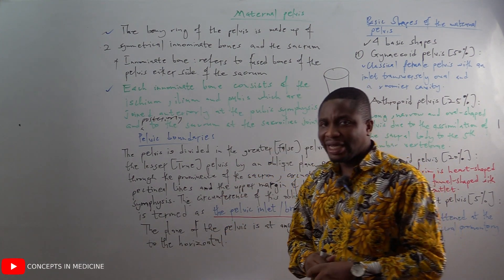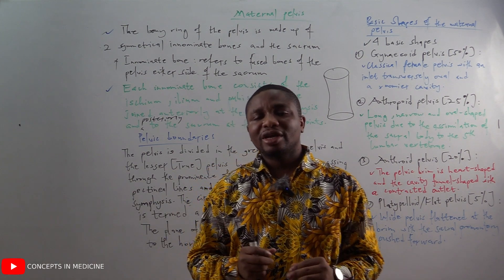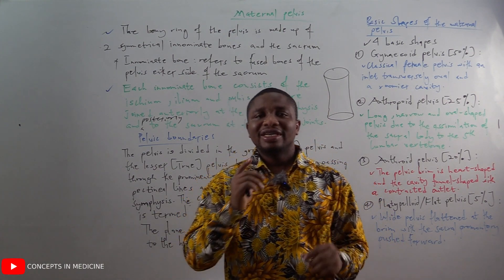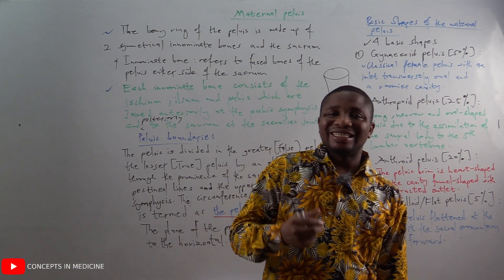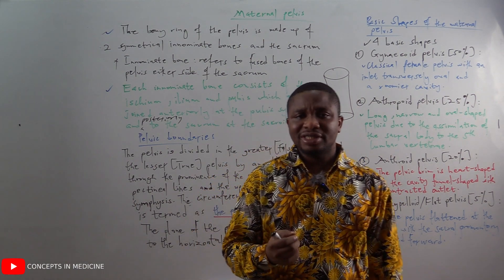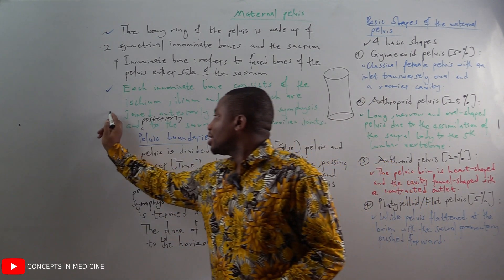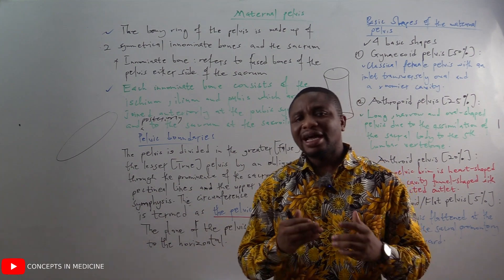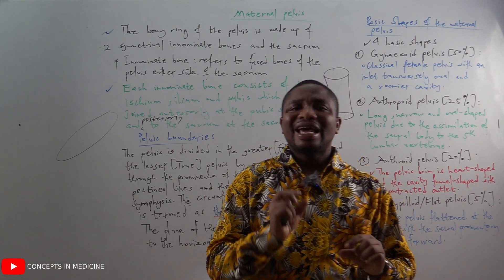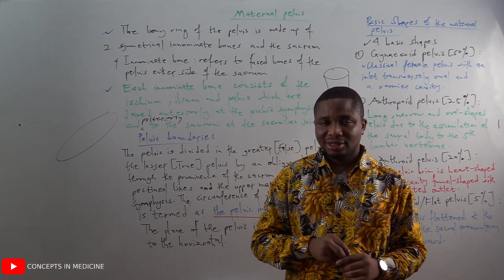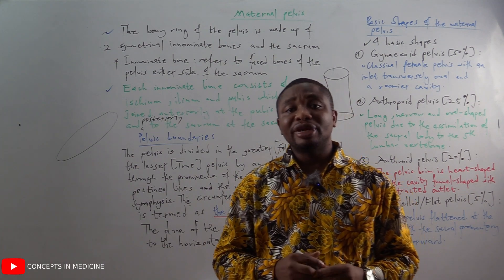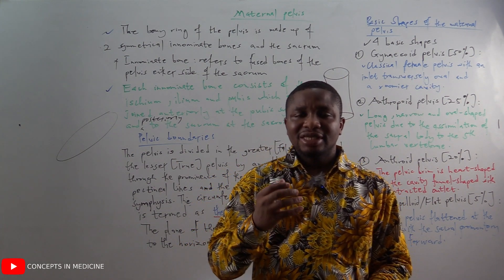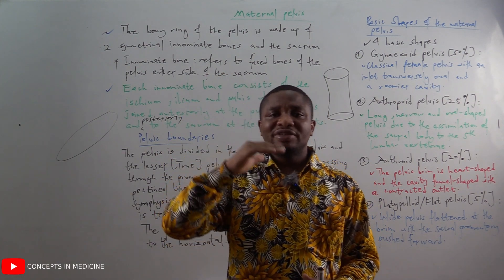Posteriorly they join the sacrum at the sacroiliac joint. The pelvis is divided into the greater, or false pelvis, and the lesser, also known as the true pelvis, by an oblique plane passing through the prominence of the sacrum, the arcuate line, the pectineal line, and the upper margin of the pubic symphysis. This plane's circumference is known as the pelvic brim or inlet.